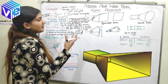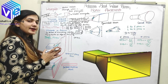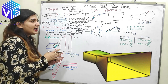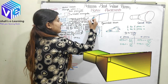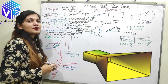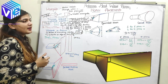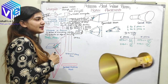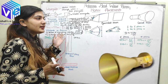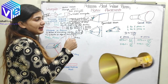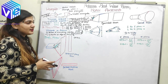The third type is pyramidal horn. In pyramidal horn, if I flare out both E segment and H segment — both E wall and A wall — I will get pyramidal horn. Similarly, if I have a circular waveguide and if I flare out that circular waveguide, I will get a conical horn.